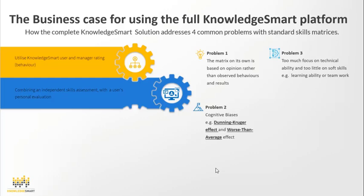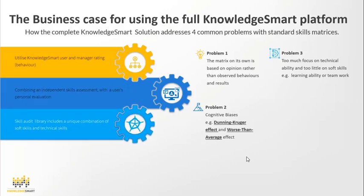Problem three: too much focus on technical ability and too little on soft skills — such as learning ability or teamwork. Skills matrices tend to focus too much on technology and process skills, often failing to include how effective someone will be at learning new things or their soft skills, both of which are equally important. KnowledgeSmart addresses this with over 22 skills audits covering a unique combination of technical skills and soft skills.